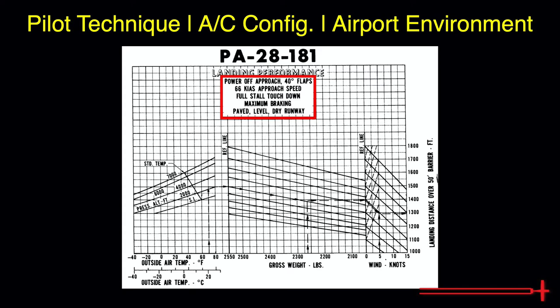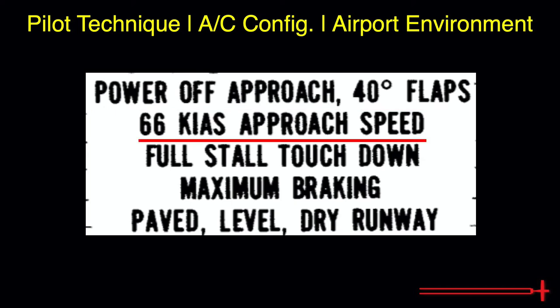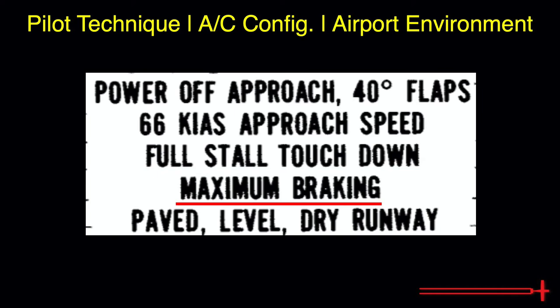Typically in the notes for any performance chart, we are provided the necessary aircraft configuration and often a thing or two about technique and airport environment. We see that the distances are based on a landing with closed throttle, 40 degrees of flaps, a 66-knot approach to a full stall touchdown, and maximum braking applied on a paved dry level runway.